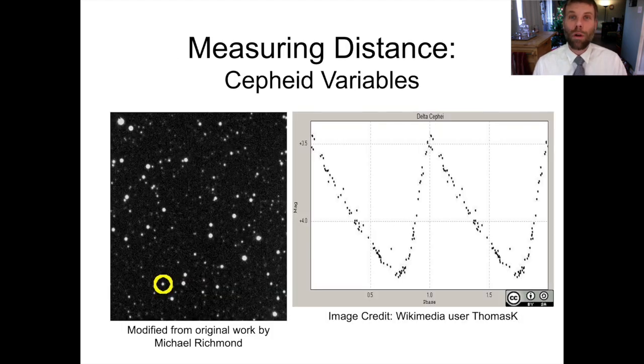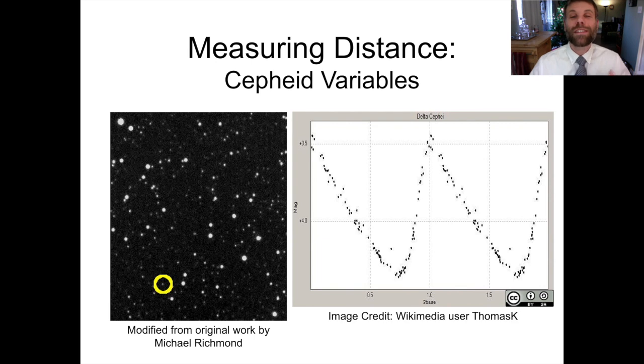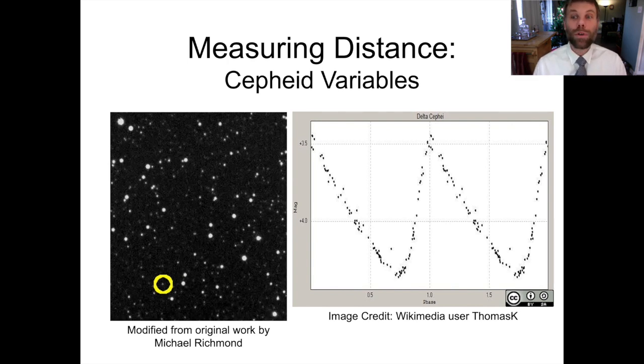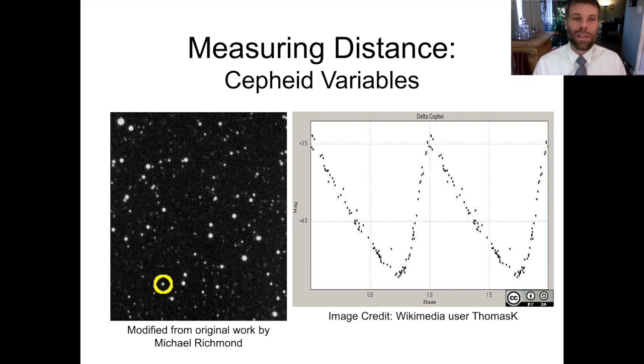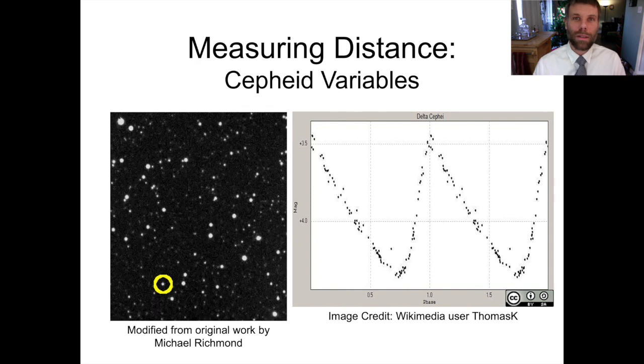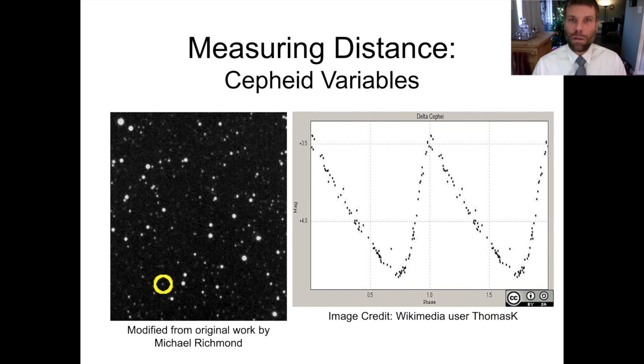That's how the next rung on the ladder works as well. The next rung relies on a category of objects called Cepheid variables. As the name implies, Cepheids are variable. They change their brightness over time in a predictable way. You can see on the left-hand side of the slide, two images taken at two different times. And you'll notice, highlighted by the yellow circle, a star that is alternately bright and faint, and then bright and then faint. And that is an example of a Cepheid variable.